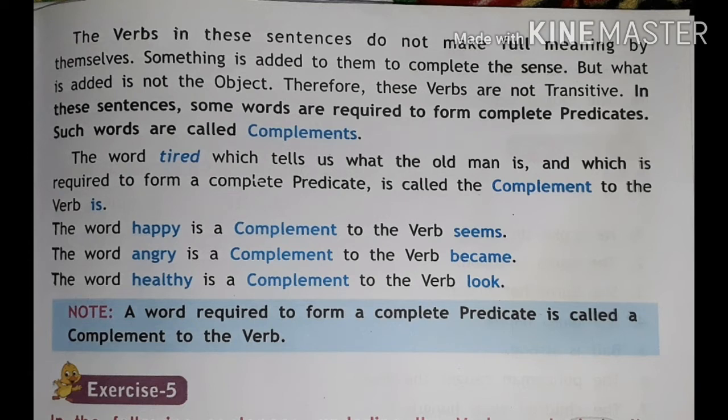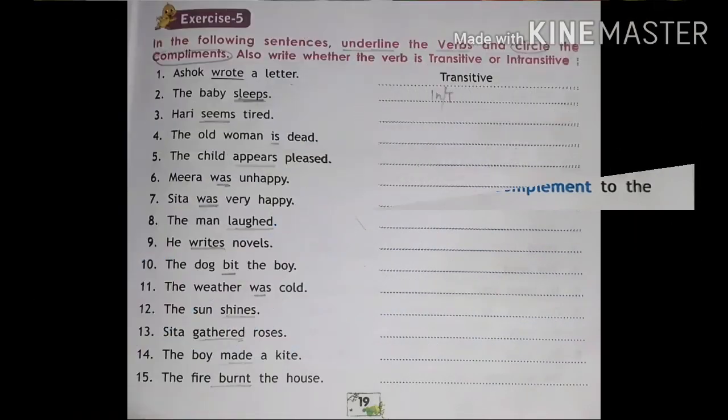So we come to the conclusion that a verb needs either an object or a complement. Transitive verbs need an object, and intransitive verbs need a complement to complete their sense. Now we can solve the exercises.